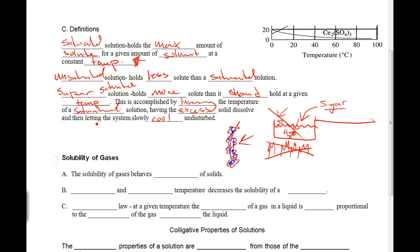Now we need to know the difference between the three. Super means more, so supersaturated means you are holding more than you can. Un means less, so unsaturated means you're holding less than you can. And then saturated means we're holding exactly as much as we can.